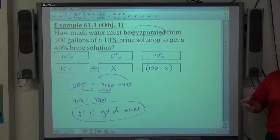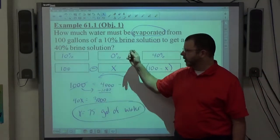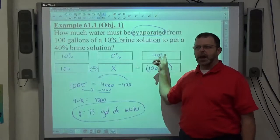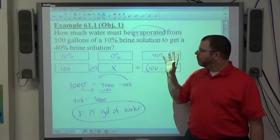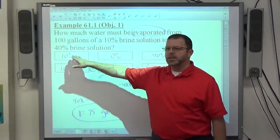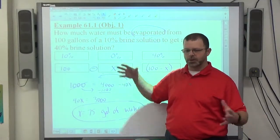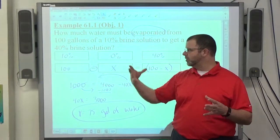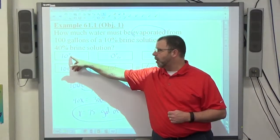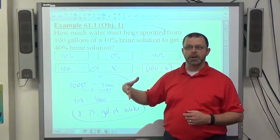Okay? Notice what happened here to the percent. It seems weird. We're subtracting, but we end up with a higher percent. The reason we end up with a higher percent is because the brine is not being messed with, right? We're extracting water only. The brine is staying there. So the initial percentage is 10% brine, which means 10 gallons of brine mixed with 90 gallons of water, right?